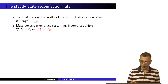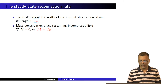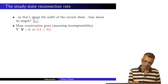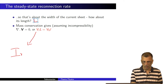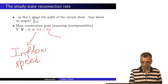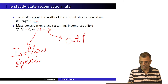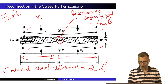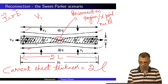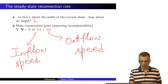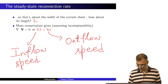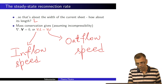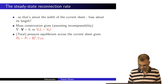Divergence of V equals zero is equivalently expressed as V_i times large L equals V_naught times small l, where V_i is the inflow speed and V_naught is the outflow speed. This is the one-dimensional equivalent of divergence of V equals zero. So the ratio of large L to small l is given by the ratio of V_naught to V_i — that is what this is telling us.